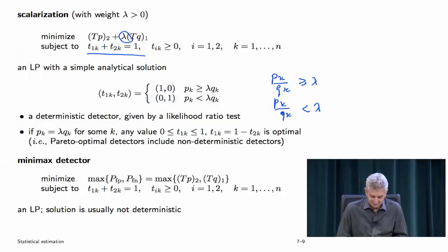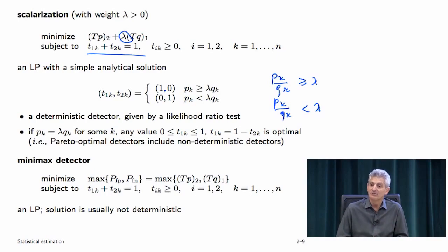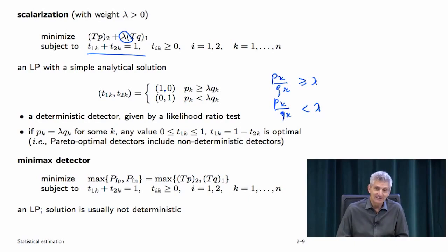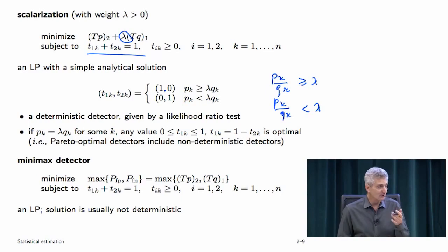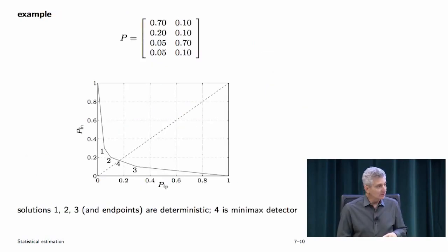The minimax detector says: I care about false positive and false negative equally — minimize the maximum error probability. This is an honest LP, and the solution is generally not deterministic; the detector has entries that are not 0 or 1.